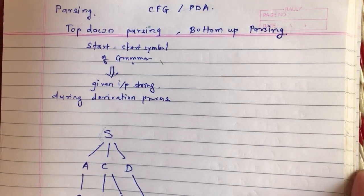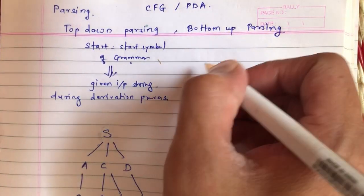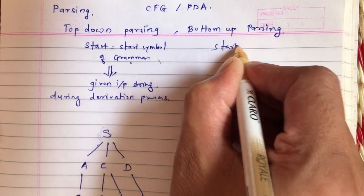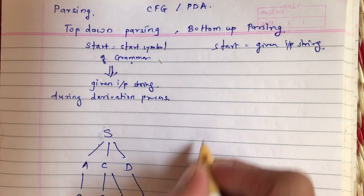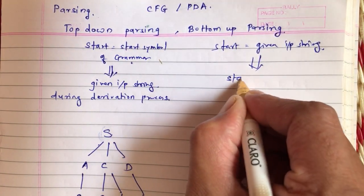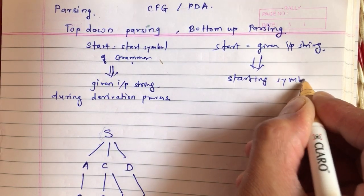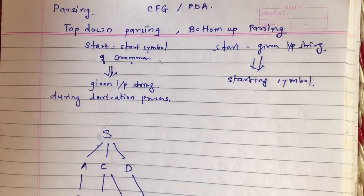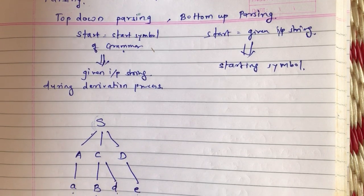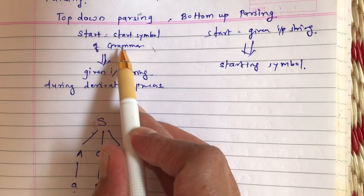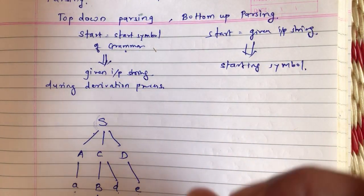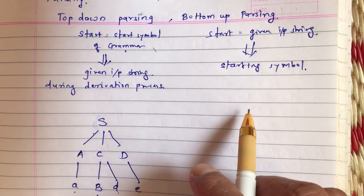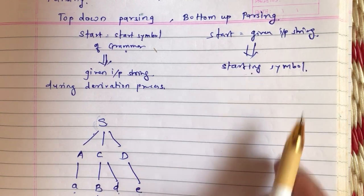There is another type of parsing called bottom-up parsing. In this approach, we start from the given input string itself and try to move towards the starting symbol of the grammar. The approach is different: instead of starting from the starting symbol and going to the input string, here we start from the string and apply production rules in reverse, reducing back to the starting symbol of the grammar.